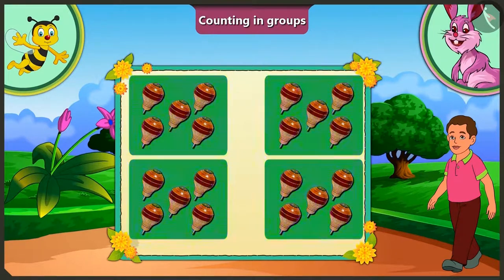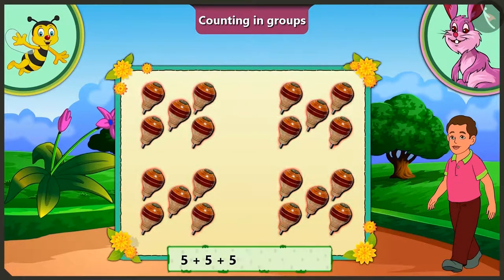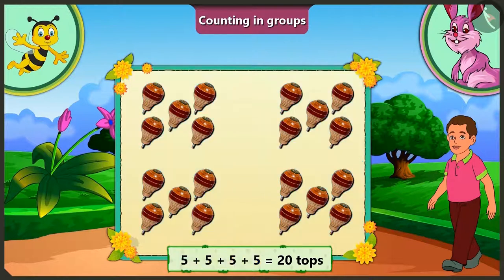That means there are four tops in total. No, there are groups of five tops each — that means there are twenty tops in total.